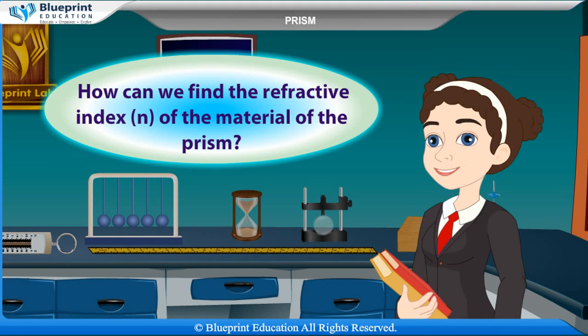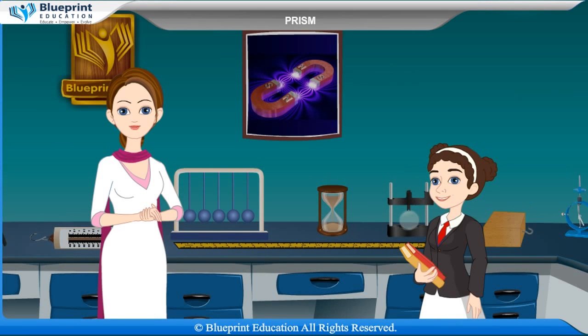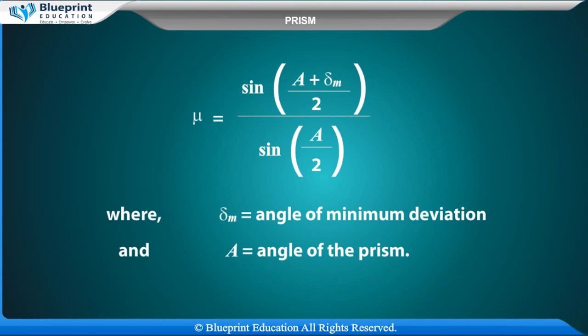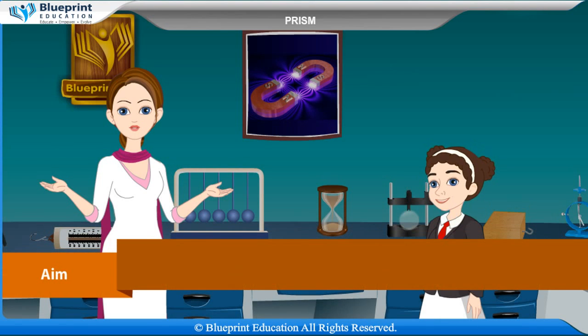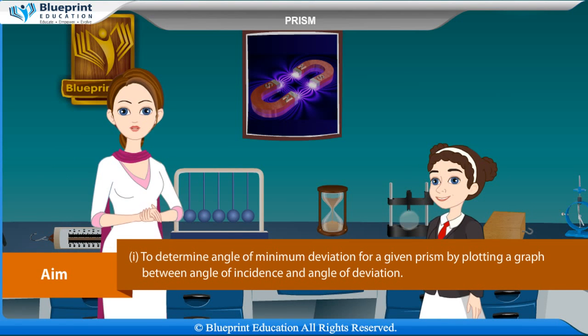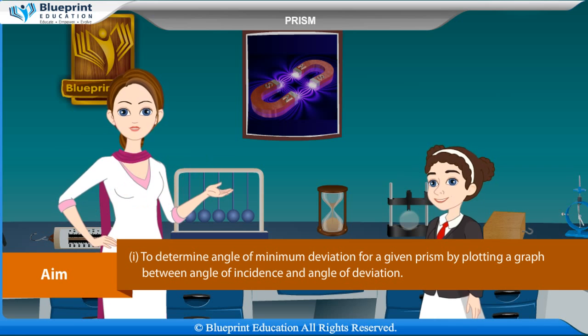The refractive index μ of the material of the prism is given by: μ = sin((A + δm) / 2) / sin(A / 2), where δm is the angle of minimum deviation and A is the angle of the prism.